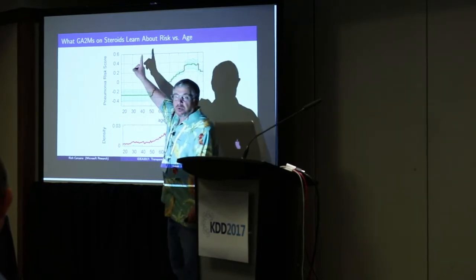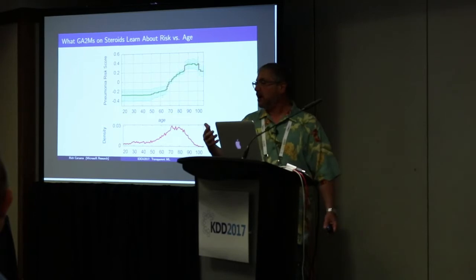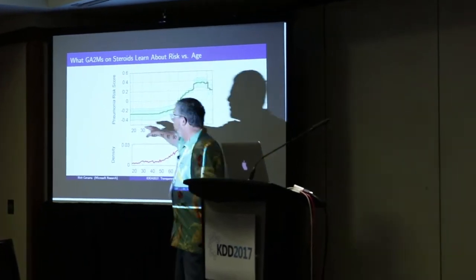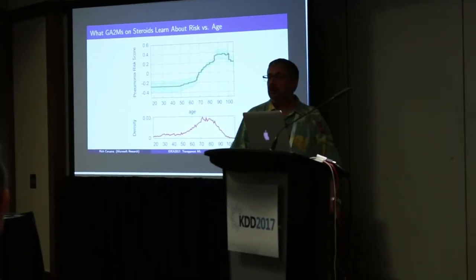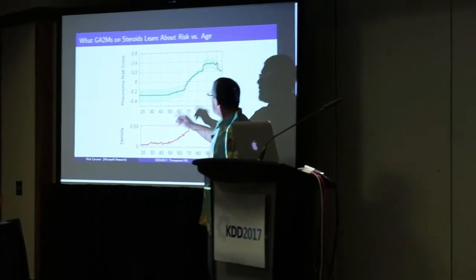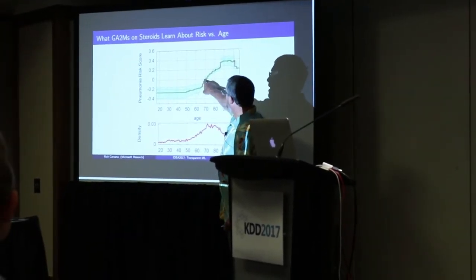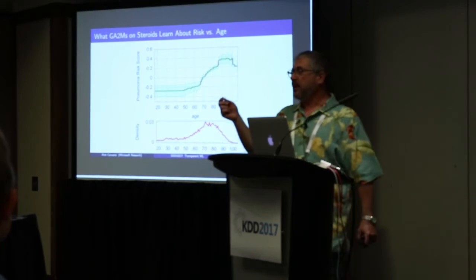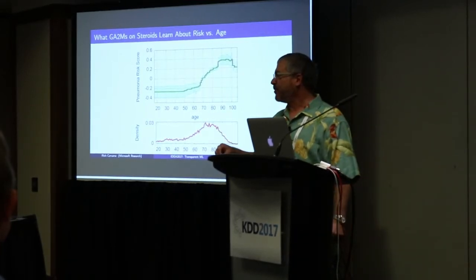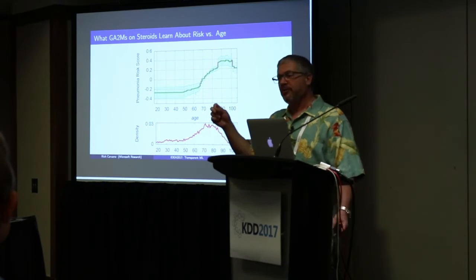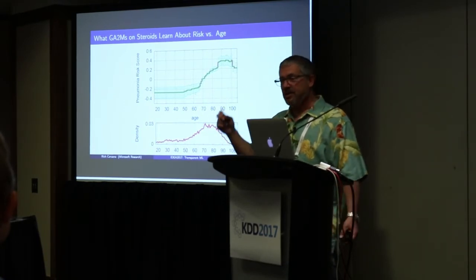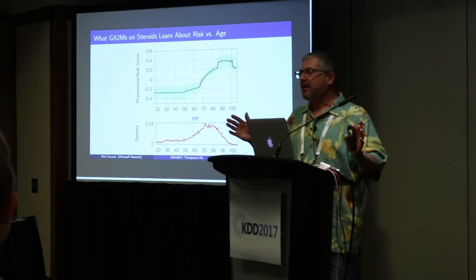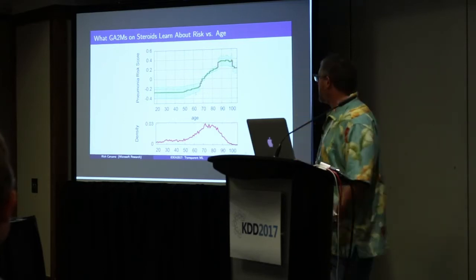This is risk: the higher the score, the worse off you are — it's like log odds. Plus one would roughly double your probability of death; minus one would cut it in half. The way you use this model: find your age, read off a number, write it down. Then go to the blood pressure graph, read it, write it down. Add all those numbers together, apply 1/(1+e^(-x)), you get a probability. So it really is a form of logistic regression on steroids.